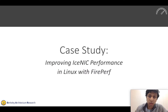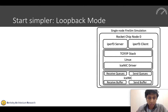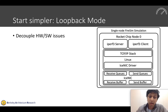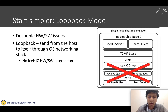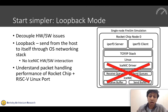Now let's use these tools to actually improve the performance of the system running networking benchmarks. We're trying to run iPerf3 between two simulated nodes and maximize network performance. Before we do that, we'll start simpler in loopback mode — to decouple hardware and software issues, we run the server and client side on the same simulated machine, communicating through the standard Linux networking system but without involving our NIC driver or NIC RTL. We're essentially understanding the packet handling performance of RocketChip with the RISC-V Linux port.